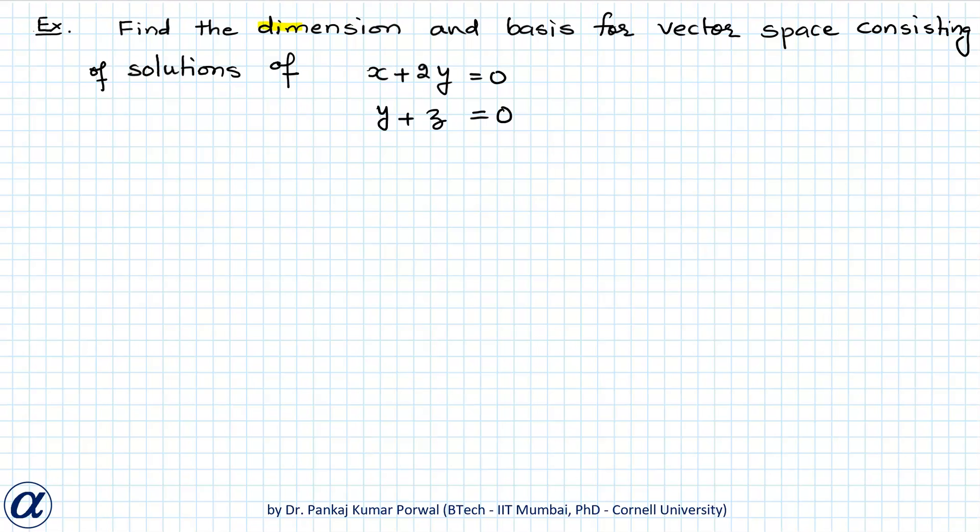In this question, we want to find dimension and basis for vector space consisting of solutions of a homogeneous system of equations x plus 2y equals to 0 and y plus z equals to 0.